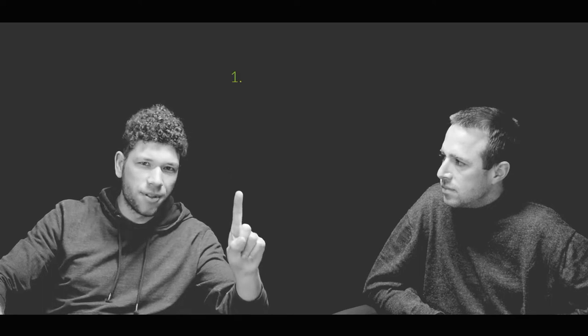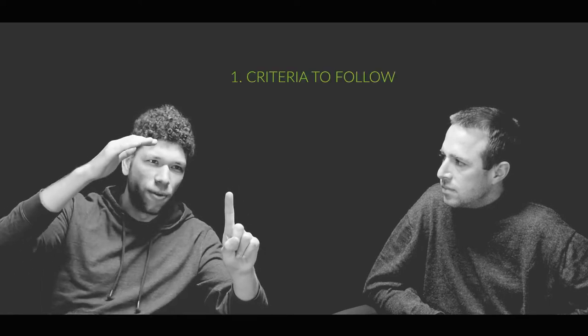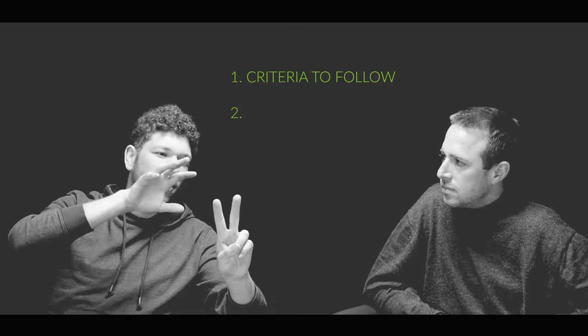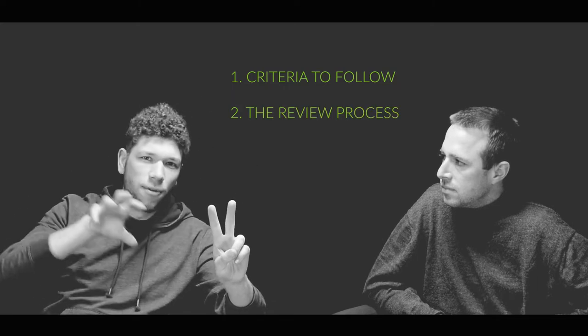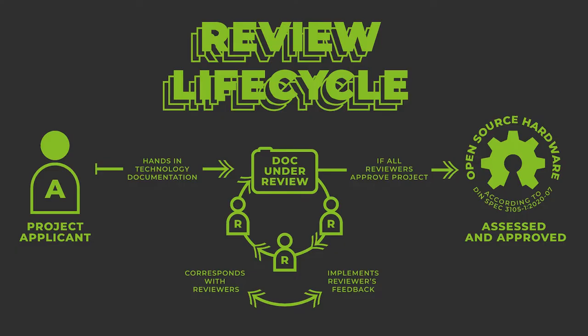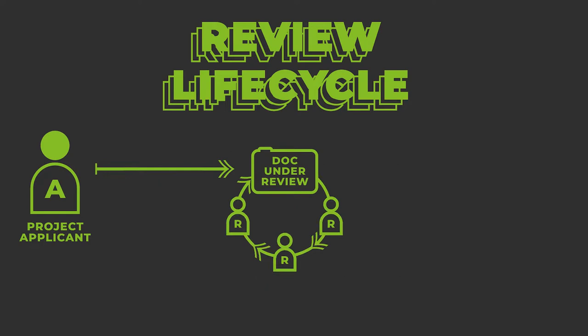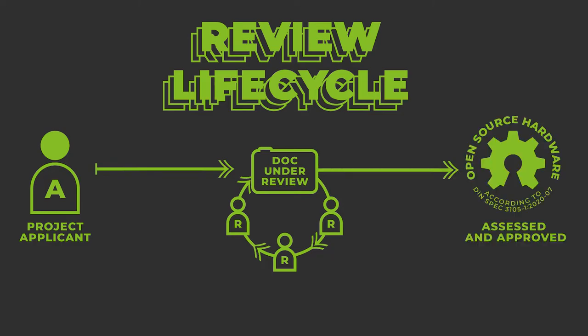So what do people need to really be able to replicate and modify the machine? The standard consists of two parts. The first explains enforceable criteria and the second defines a community-based reviewing process. You can see the process here in the graphic — it's actually pretty easy. As the hardware project, you submit the technical documentation, then independent reviewers check it, and if all issues are resolved, it gets officially attested.